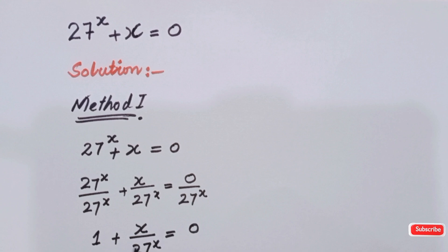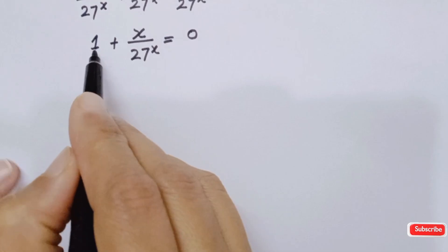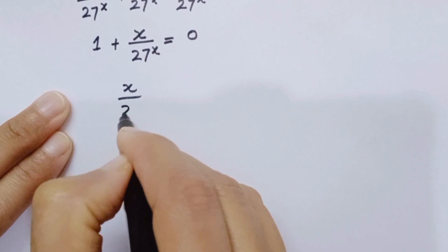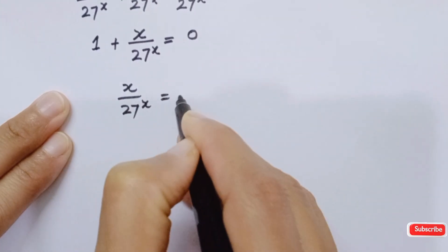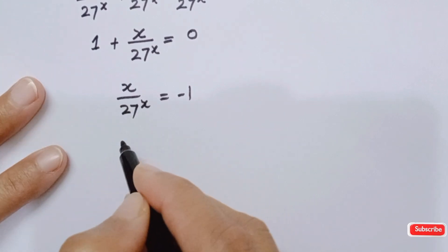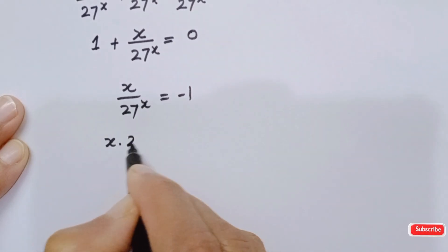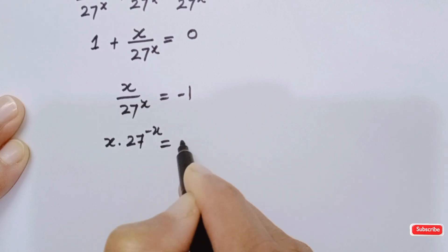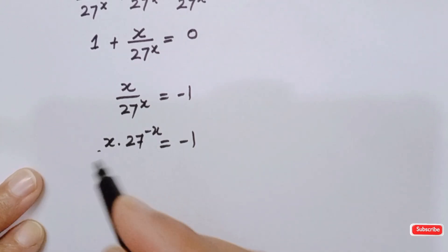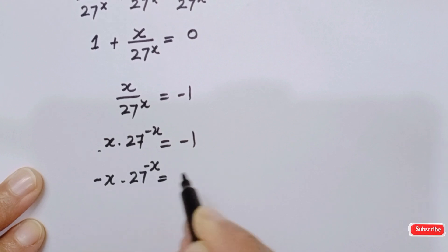Here we have 0. In the next step we will bring 1 from the left hand side to the right hand side, giving us x over 27^x is equal to minus 1. We can rewrite this as x times 27 to the power negative x is equal to minus 1. Now multiply both sides by minus 1, so minus x times 27 to the power x is equal to 1.